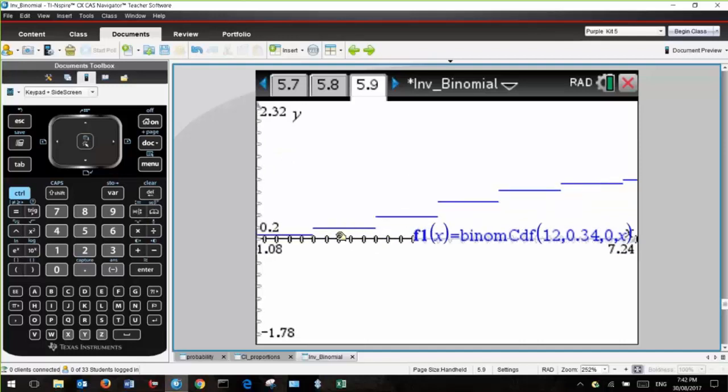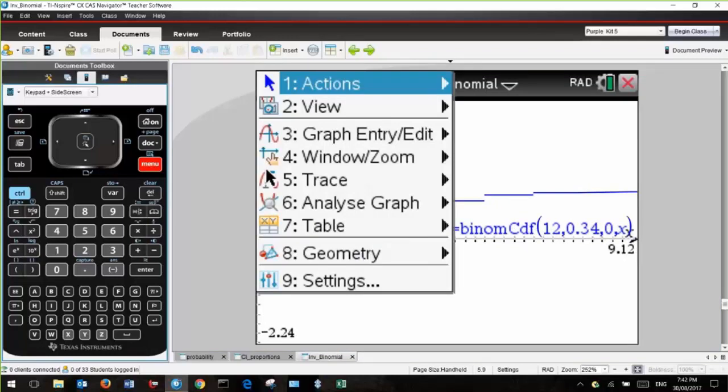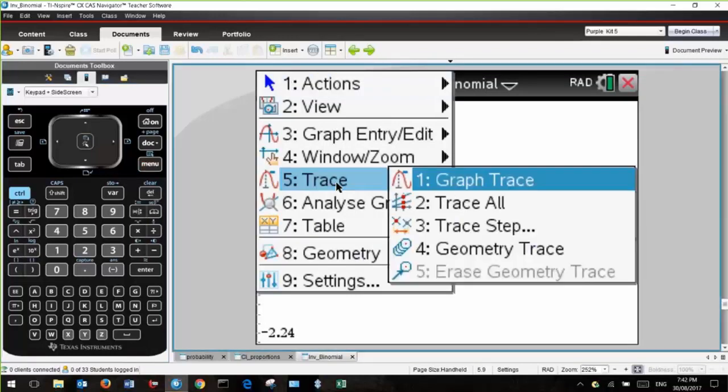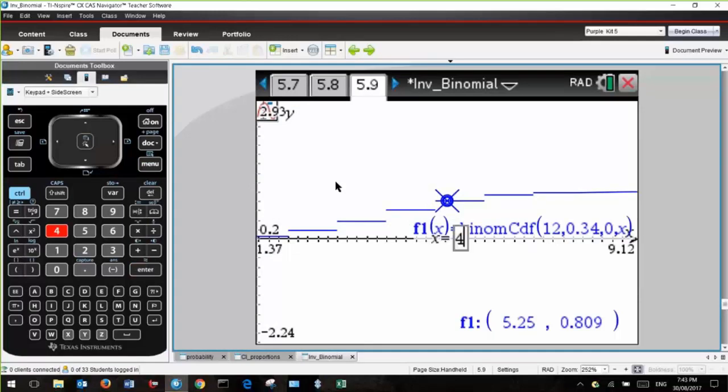I can use the trace. Menu, sorry, the trace, graph trace, and then just type in a value. Let's try 4, and we see that 4 down the bottom here, the probability is 0.612 when X is 4, so that's no good. Let's try another value, 7, 0.97, too big, so that's no good. And of course we know from the previous calculation that 6 works, so press 6, bingo, 6 works. It's the largest number that is just below 0.95.